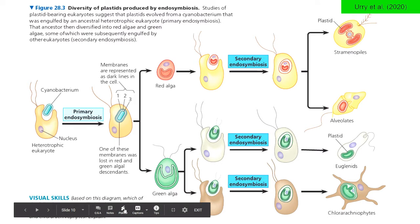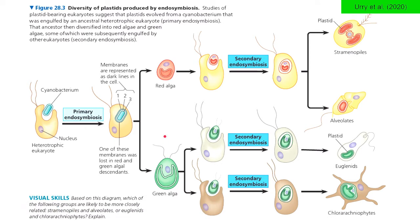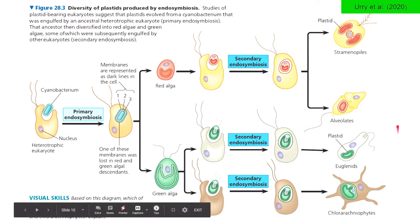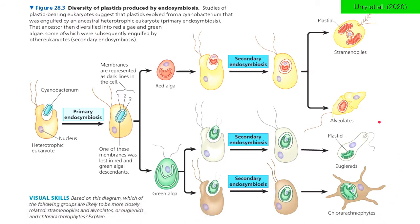I hope you still remember our discussion on endosymbiotic theory that explains how eukaryotic organisms evolved from prokaryotic ancestors. The same thought is also used to explain why we have such diverse organisms under Kingdom Protista. This is what scientists are proposing to possibly explain that phenomenon.